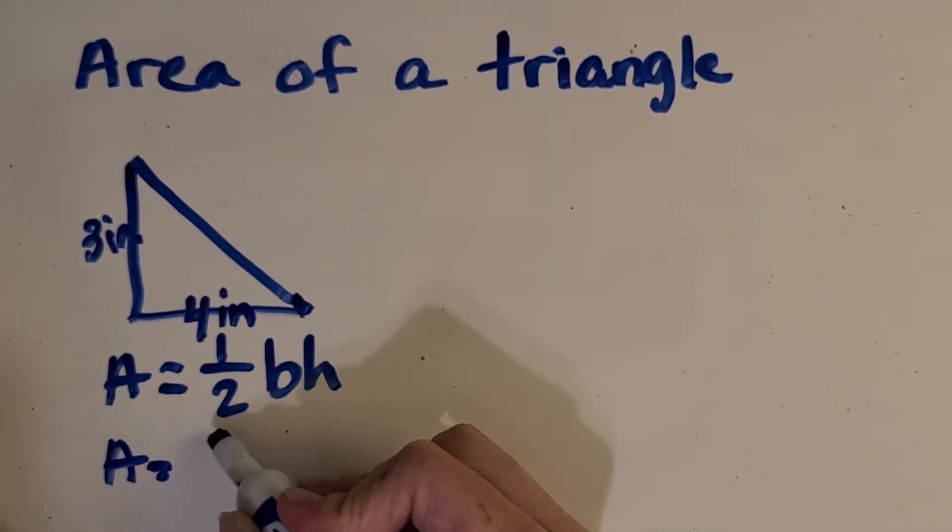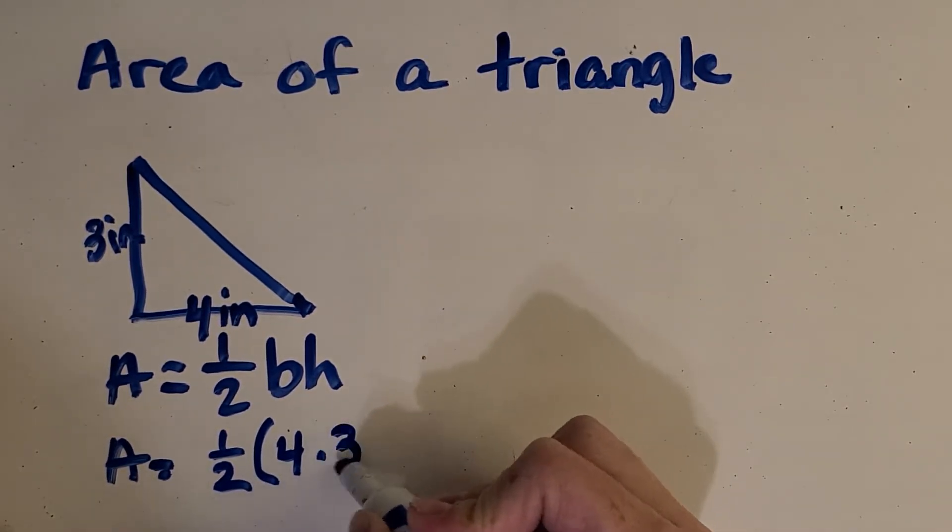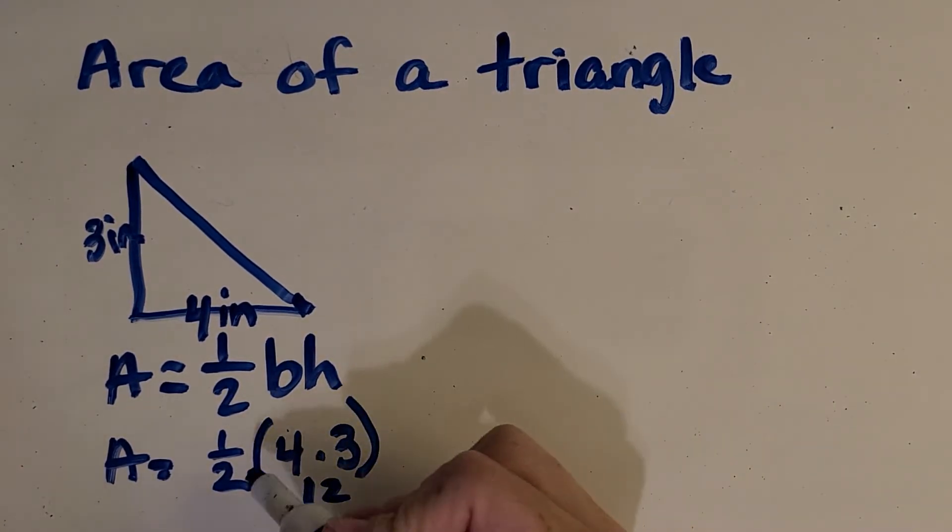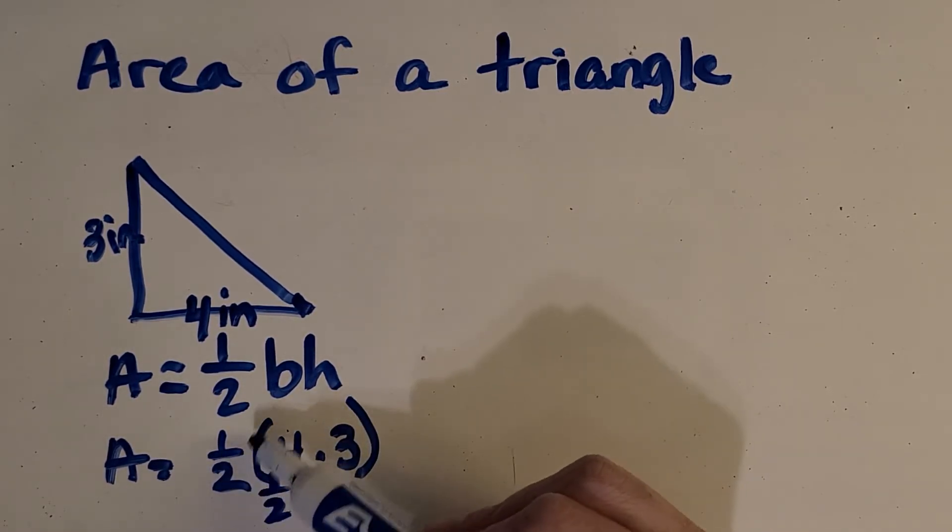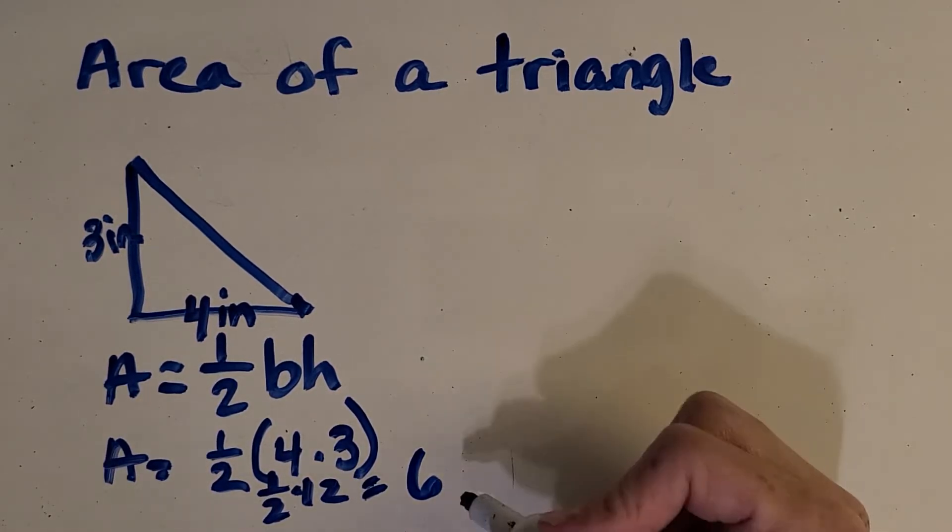Okay, so then we just need to kind of plug things into the formula. So we've got one half. And then we've got a base times a height. Okay, so let's start working on this. Let's start with the inside the parentheses. So what is four times three? All right, good. Twelve. And then what is half of? So when a number is bumped up next to a parentheses, we always multiply. So what is one half times 12? Or one half of 12? Okay, you got it. Six. So the area of this triangle is six square inches.